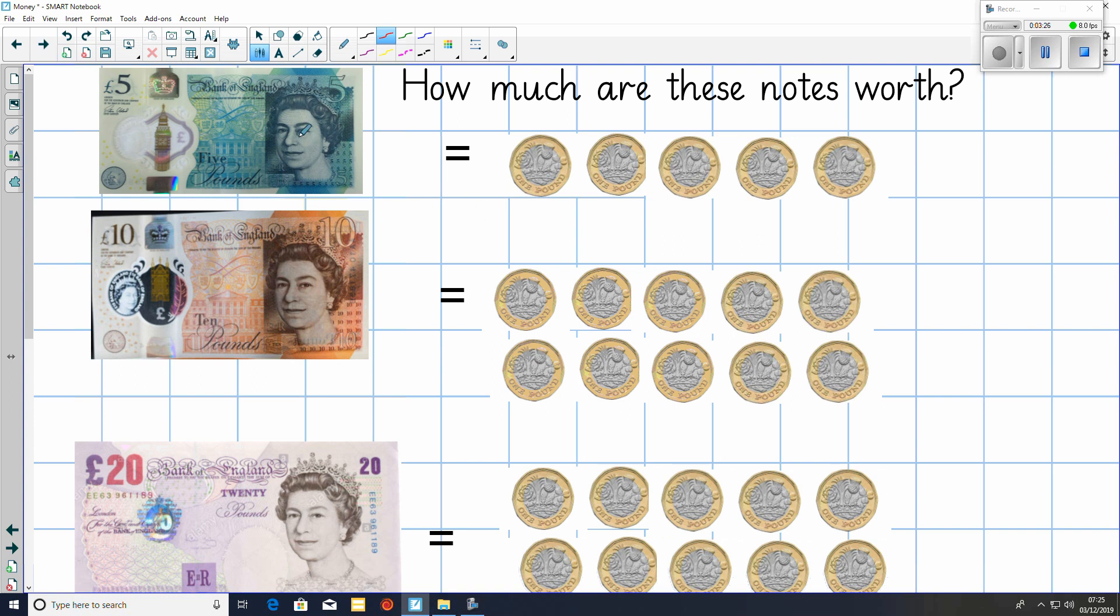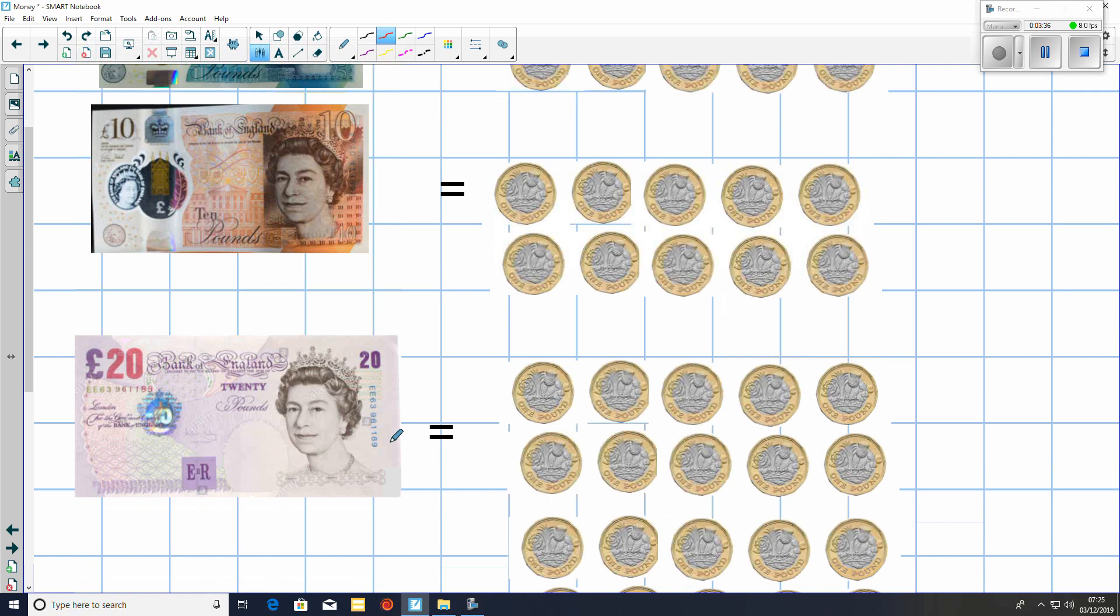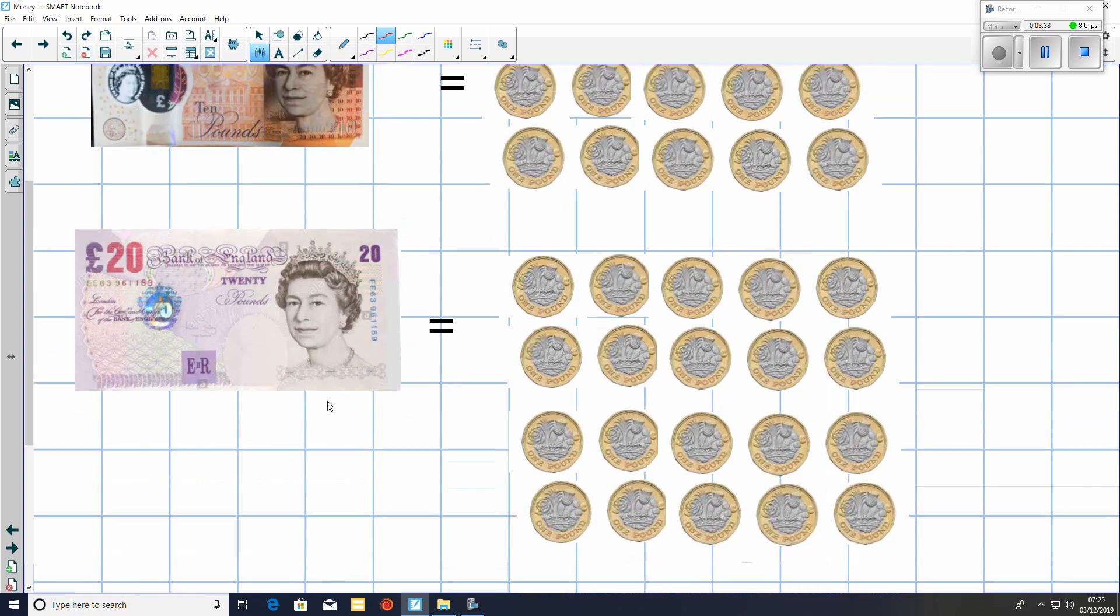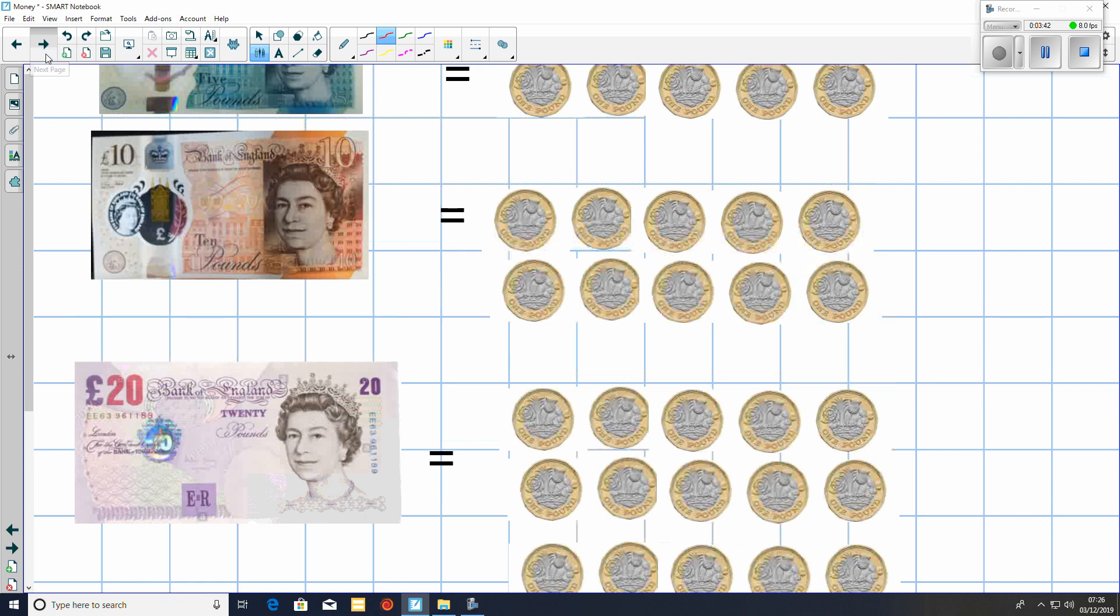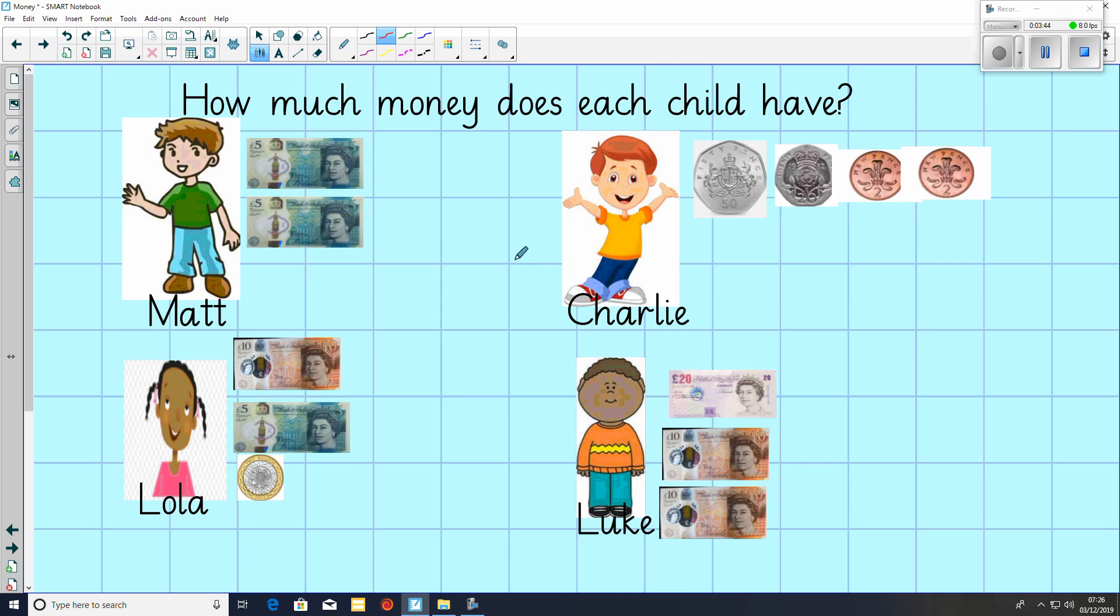As well as coins, we have also got notes. The £5 note is worth 5 £1 coins. The £10 note is worth 10 £1 coins. And the £20 note is worth 20 £1 coins. Pause the video and have a go at working out how much money each of these children have got.